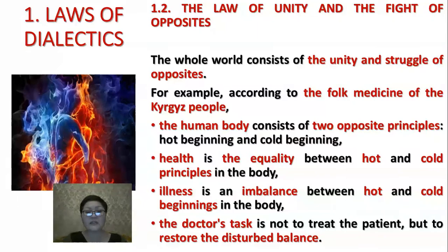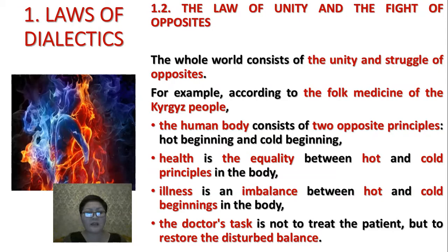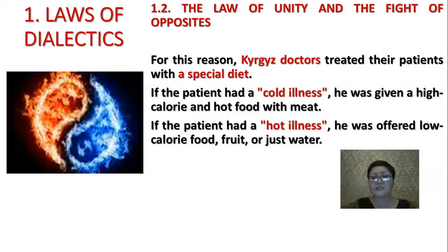For example, according to the folk medicine of the Kyrgyz people, the human body consists of two opposite principles: hot beginning and cold beginning. Health is the equality between hot and cold principles of the body. Illness is an imbalance between hot and cold beginnings. The doctor's task is not to treat the patient but to restore the disturbed balance. Kyrgyz doctors treated their patients with a special diet: if the patient had a cold illness, he was given high calorie hot food with meat; if the patient had a hot illness, he was offered low calorie food, fruit, or just water.